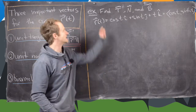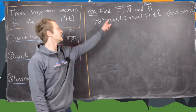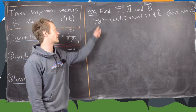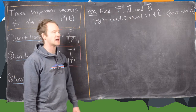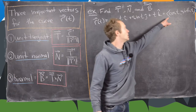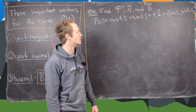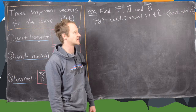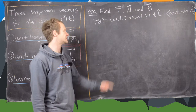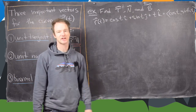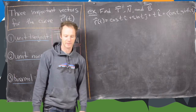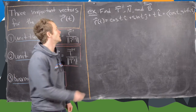The example we want to look at is: find the unit tangent, unit normal, and binormal vector for the curve r(t) = cosine t in the i direction, sine t in the j direction, and t in the k direction — or written as components: (cos t, sin t, t). As seen in a previous video, this curve is a helix going up the z-axis.